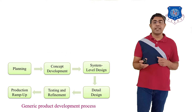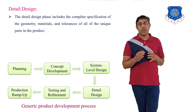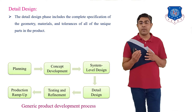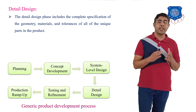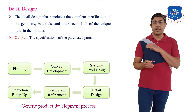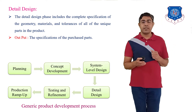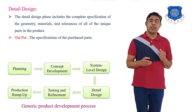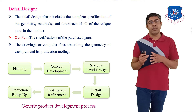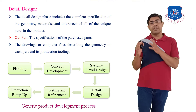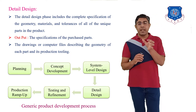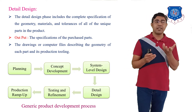Next is Detail Design. Detail design includes the complete specifications of geometry, materials, and tolerances of all of the unique parts in the product. The output of this step is the creation of purchase part specifications, and drawings or computer files describing the geometry of each part and its production tooling — for example, CAD files.